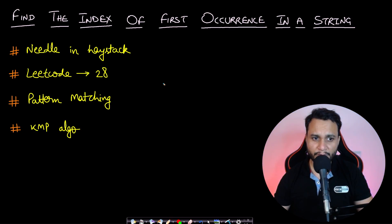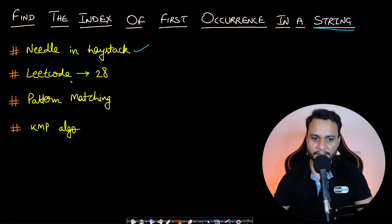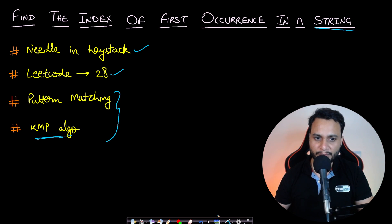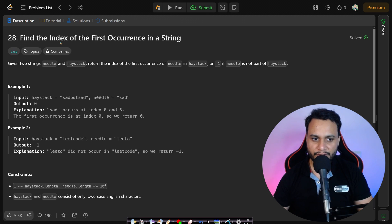Hello guys, welcome back to TechDose. In this video we will see how to find the index of the first occurrence of a string. This problem is popularly known as the needle in the haystack problem, which is LeetCode number 28. This is the same as the pattern matching problem, and I have already made a video on this using KMP algorithm as well as rolling hash — you will see the links in the description. Given two strings needle and haystack, return the index of the first occurrence of the needle in the haystack; if it is not found, return minus one.